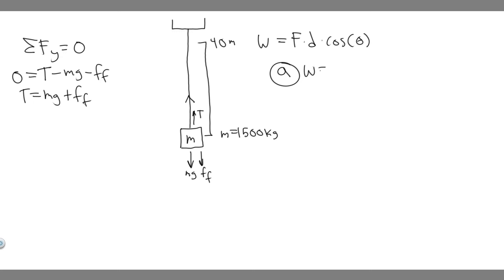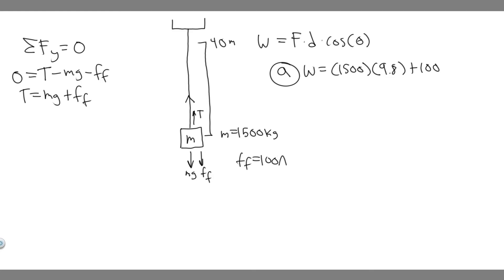For part A, since we're doing the force in the cable and we know it equals mg plus friction, we just plug that in. The work is going to be equal to mg — the mass is 1500, times g which is 9.8 — plus the force of friction. They tell us the force of friction is going to be 100 newtons, because it's constant.